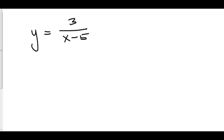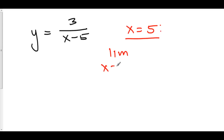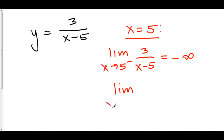Let's take a look at another example. Here we have y equals 3 over x minus 5. We have a vertical asymptote at x equals 5. Let's analyze this vertical asymptote by looking to both the left and the right of x equals 5. The limit as x approaches 5 from the left-hand side: we choose a number 0.1 to the left of 5 — how about 4.9? On top, positive; on the bottom, negative — so this goes off to negative infinity. For the limit as x approaches 5 from the positive side, let's choose 5.1: positive over positive, giving us positive infinity.